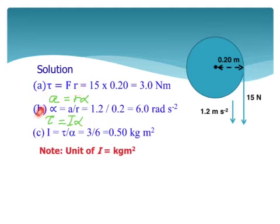For part (b), α = a/r = 1.2/0.2 = 6.0 rad s⁻². For part (c), I = τ/α = 3/6 = 0.50 kg m². Remember, the unit of rotational inertia I is kilogram meter squared.